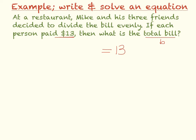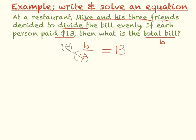Now Mike and his three friends — that's 4 people — divided the bill evenly. So the bill was divided by 4 people and it cost $13 a piece. So now when I solve this, I have B divided by 4 equals 13. So I multiply both sides by 4 and cancel them out. So B is equal to 13 times 4, which is 52.